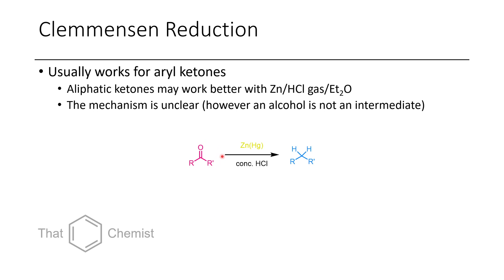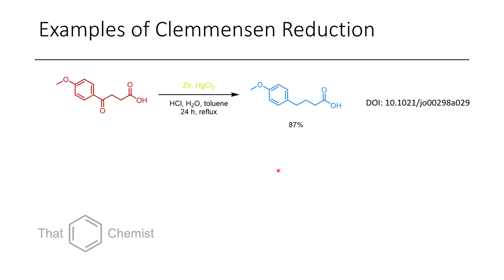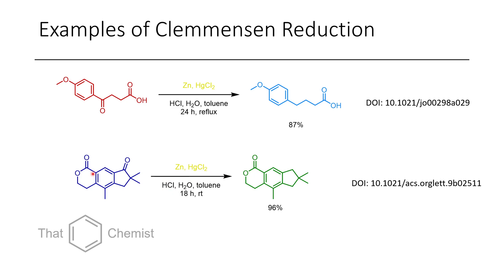The Clemmensen reduction involves treating a ketone with zinc-mercury amalgam in the presence of HCl. This works best for aryl alkyl ketones where at least one R group is aryl. However, normal ketones can be reduced to CH₂ using zinc powder or zinc wool, HCl gas, and diethyl ether. The mechanism isn't fully clear, but the corresponding secondary alcohol is not an intermediate. Examples show selective reduction of a ketone in the presence of a carboxylic acid or a lactone, which are untouched.